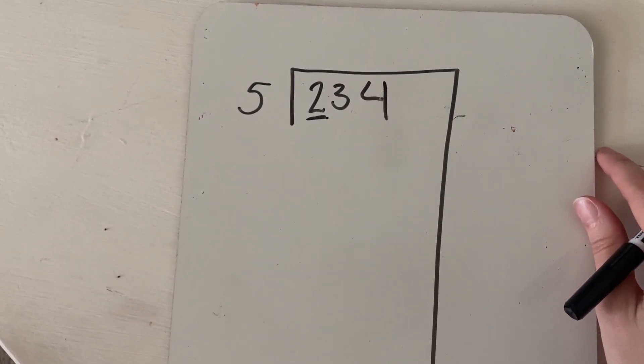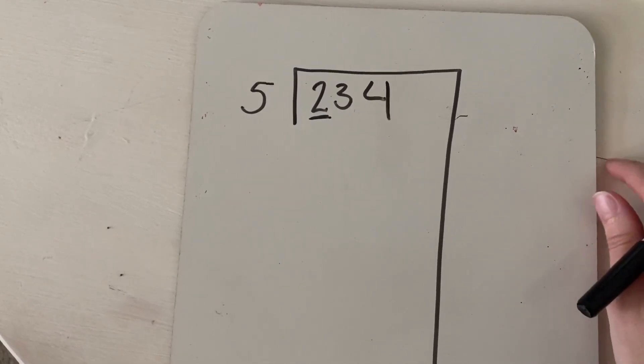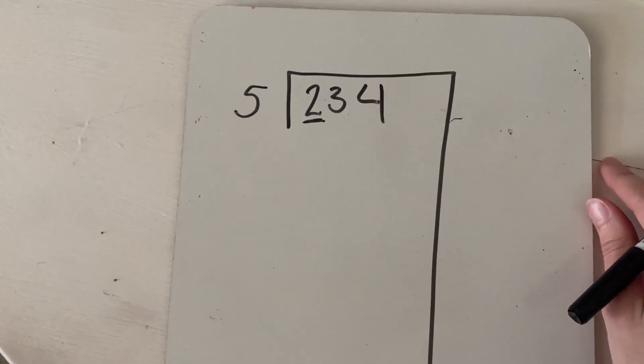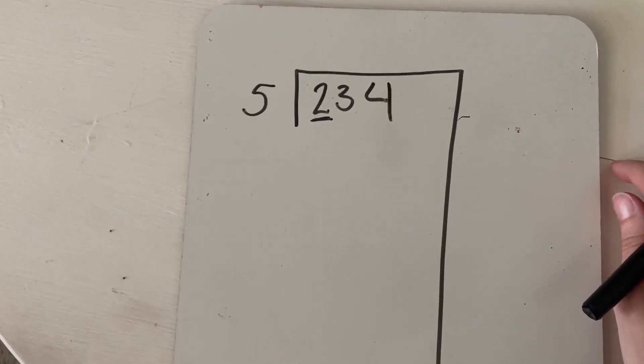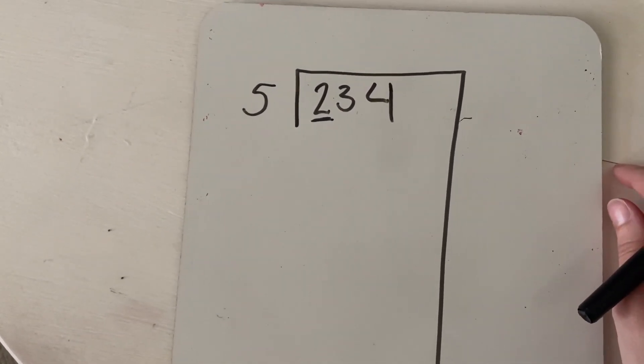So I might first think, OK, what if I did five times 100? Well, that'd be 500. That's going to be way too much. So it's got to be less than that. So next I might think, what about five times 10? Well, that's only 50. So that's really not enough.